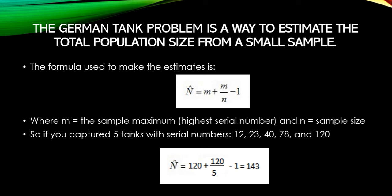So if you captured five tanks with serial numbers 12, 23, 40, 78, and 120, the important things are the number of tanks and the highest serial number. The highest serial number here was 120. You take 120 divided by 5, add that to 120, and subtract 1 — and you get 143, which means the estimate for tanks produced at that time would be 143.